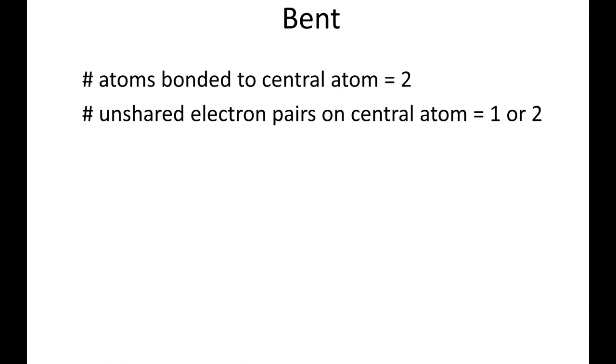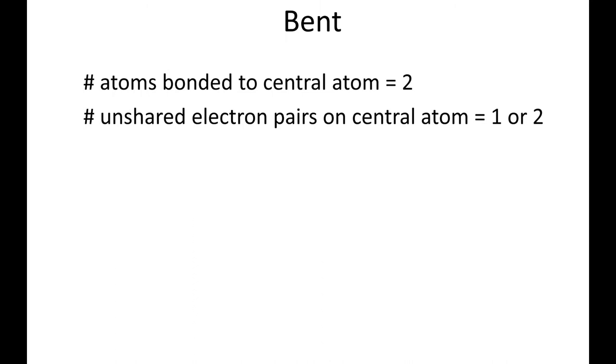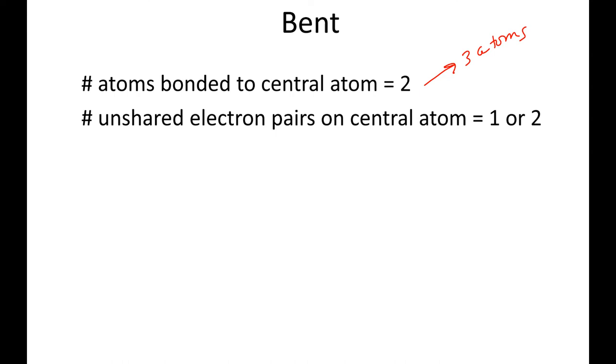The next one is bent. Bent also has two atoms bonded to the central atom, which means, once again, three atoms total. Remember, don't write what I have in red. Three atoms total. The number of unshared pairs is one or two, because sometimes you'll have two, sometimes you'll have one.